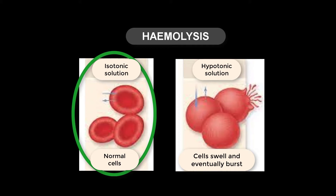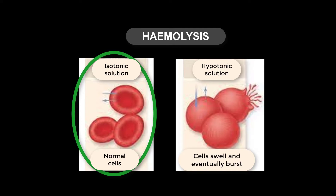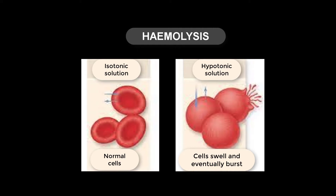Isotonic solutions are solutions which have the same concentration. Therefore, these first red blood cells were placed in a solution which has the same concentration as that found inside the red blood cells. As a result, nothing is happening and they maintain their shape, which is described as a biconcave shape.